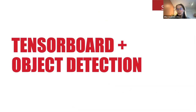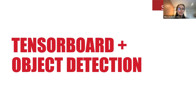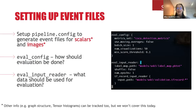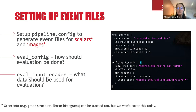Now we get to start putting the pieces together. We want to talk about how do we make sure that the metrics relevant to object detection are able to show up within TensorBoard. To make TensorBoard work with object detection models, we need to ensure that the appropriate event files are being written out during training and evaluation. This is accomplished by configuring the evaluation pipeline within the pipeline config file.